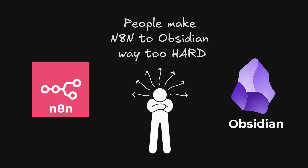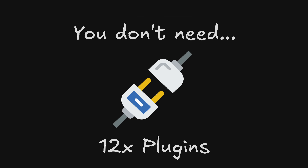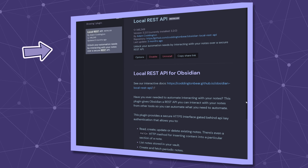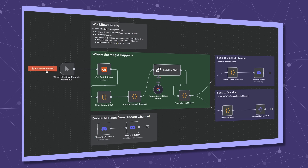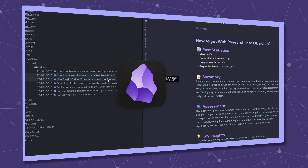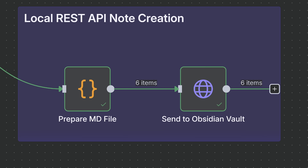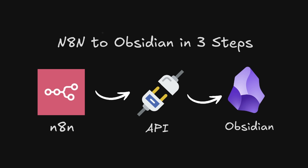People make N8N to Obsidian way too hard. You don't need cloud services, webhooks, or 12 plugins. There's a single local REST API that does it all. I'm running my self-hosted N8N through a Cloudflare reverse tunnel, which allows me to create workflows to automate node creation inside Obsidian. One community plugin, one node setup, one workflow and you're done. Let's get into it.